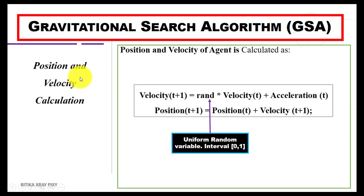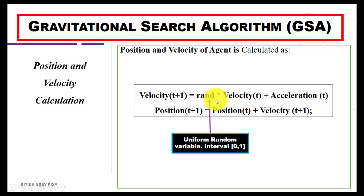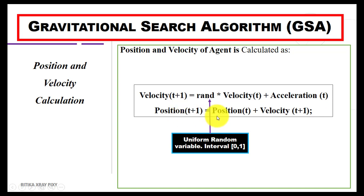Next is position and velocity calculation. To compute velocity we use a specific equation where there is a random value in the interval between 0 and 1. The new velocity equals the random value times the previous velocity plus acceleration. We can update the position by adding the new velocity to the previous position.